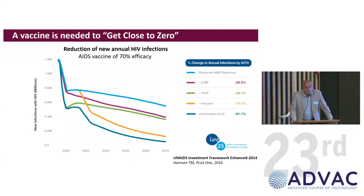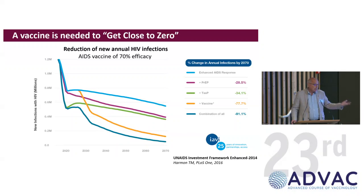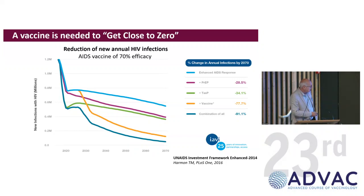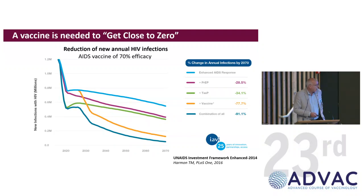Models developed so far clearly indicate that if we have a vaccine with sufficient efficacy — about 70% — and if this vaccine is introduced in the next decade, that may have a very large impact on the incidence of HIV, which is emphasized by the dark blue curve in this graph. This could be even further improved by combining vaccines with other prevention approaches like TASP and PrEP approaches, shown by the orange curve.